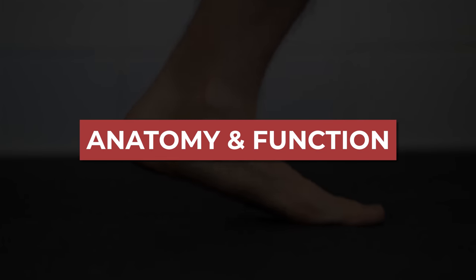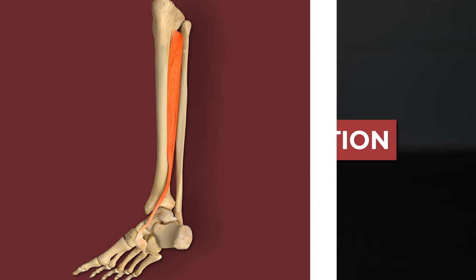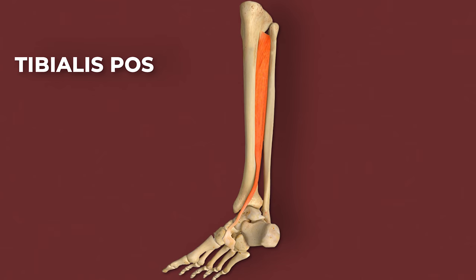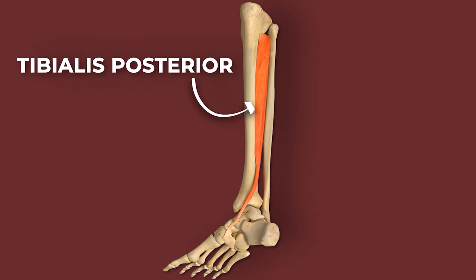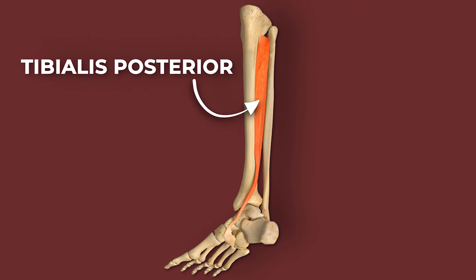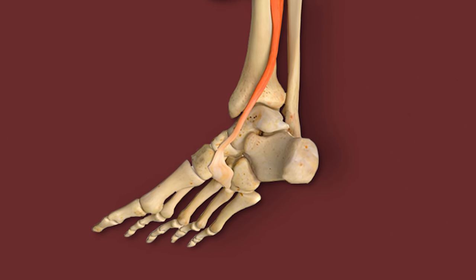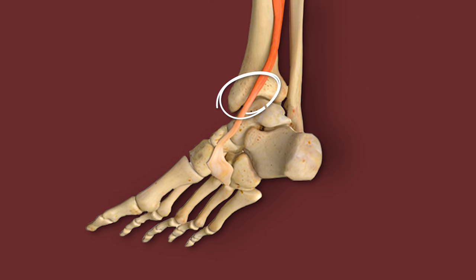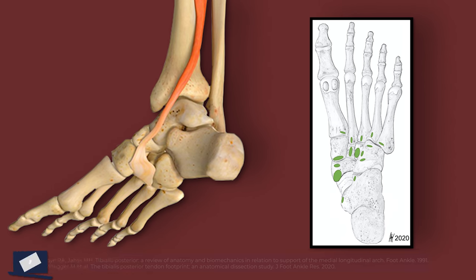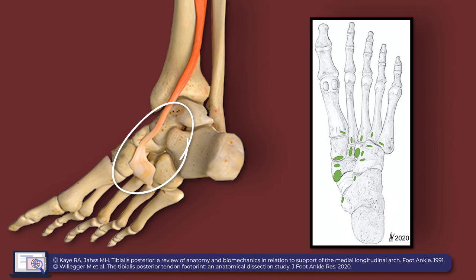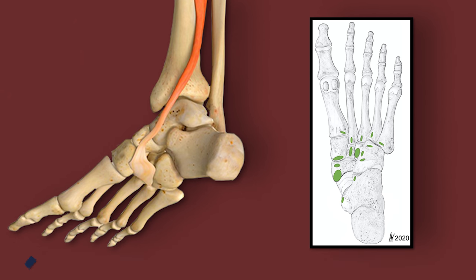Anatomy and function. The tibialis posterior is located in the deep posterior compartment of the lower leg, originating from the tibia, fibula, and interosseous membrane. Its long tendon then travels behind the medial malleolus, passes through the tarsal tunnel, and inserts on the navicular, cuneiforms, cuboid, and bases of metatarsals 2 through 4, although the exact attachments may vary a bit.